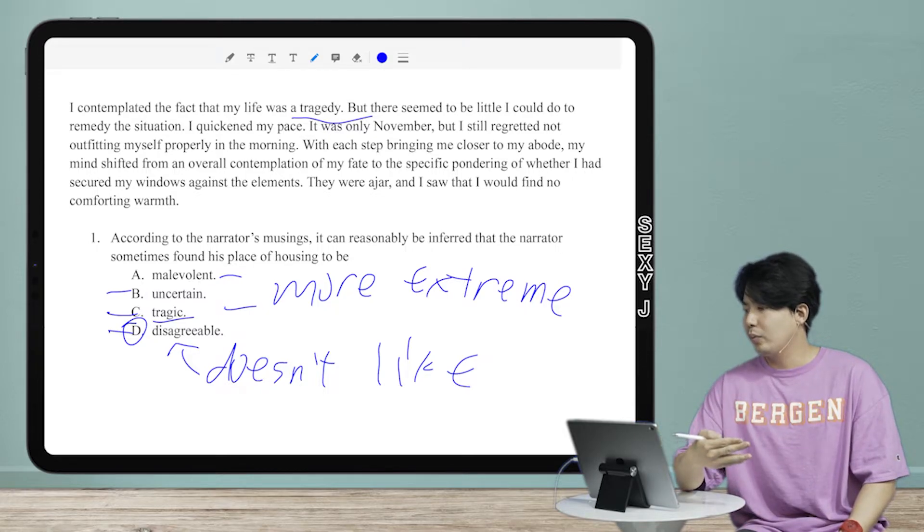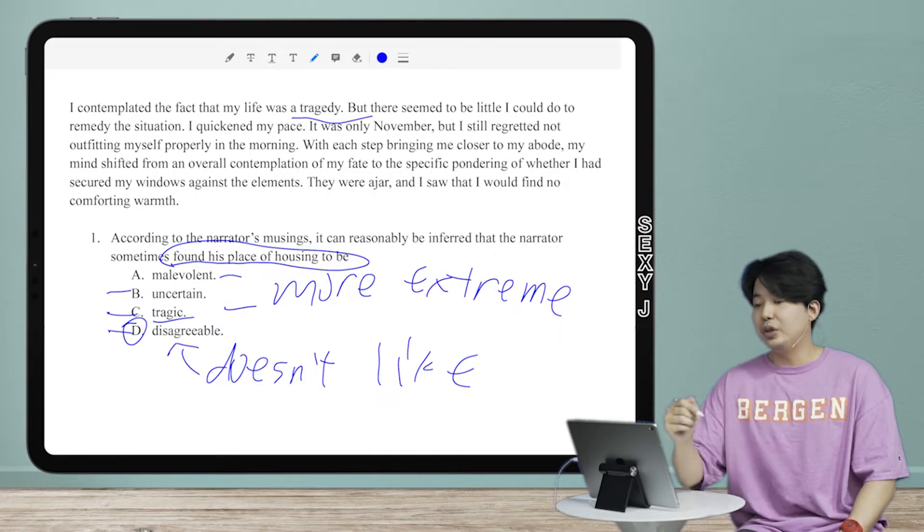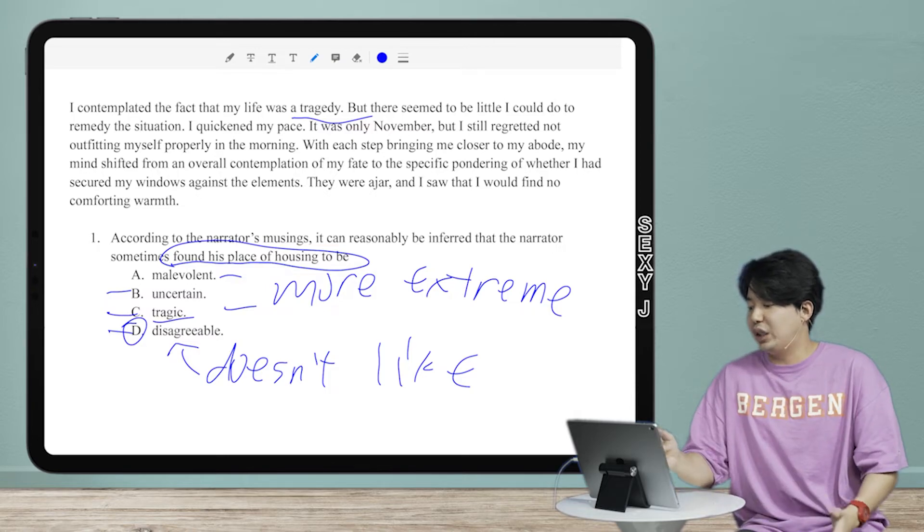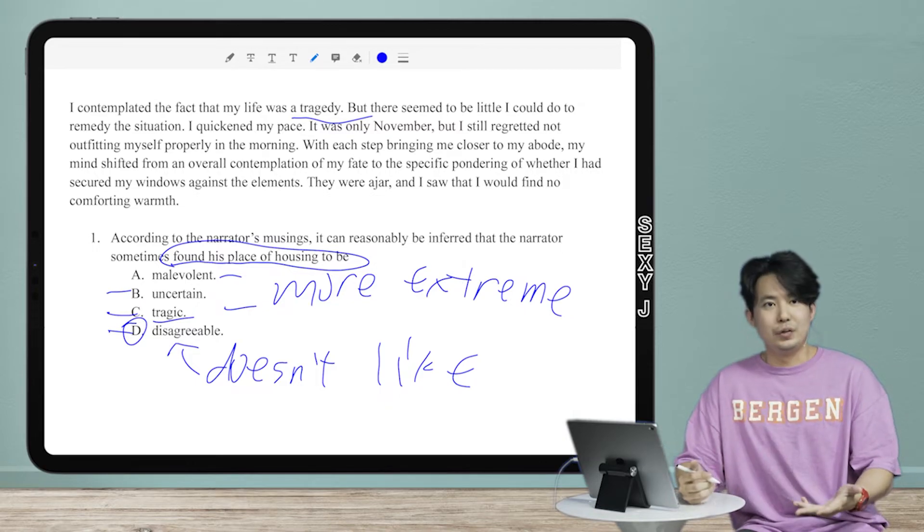Oh, let's actually talk about the question here for a second. He sometimes found his place of housing to be. So this one, this is the exact type of question people argue with me all the time. Jay, he literally says his life's a tragedy. Why is the answer not tragic? Because I'm not asking about his life. What am I asking about? Where he lives.